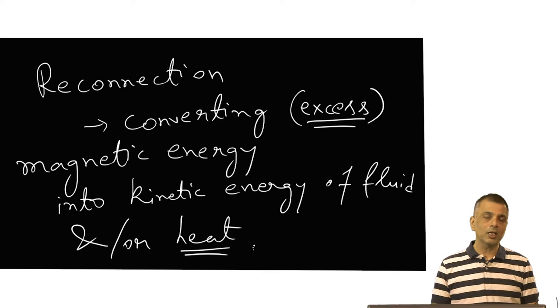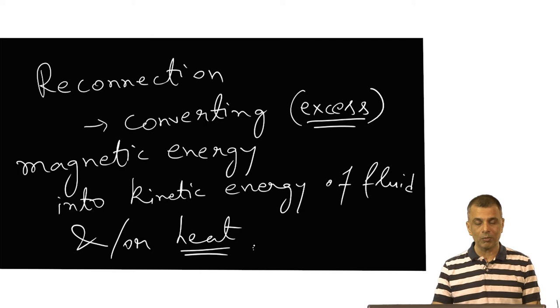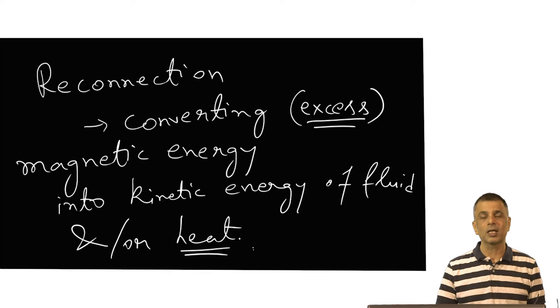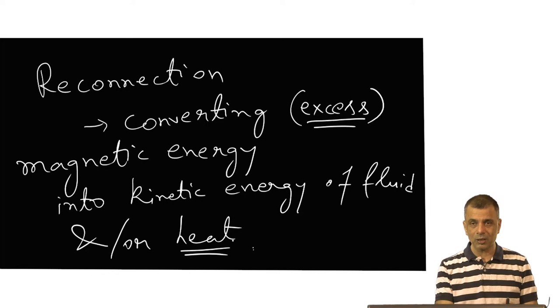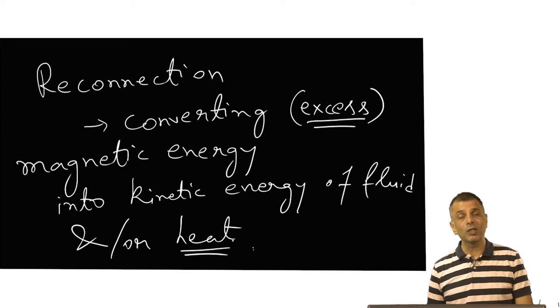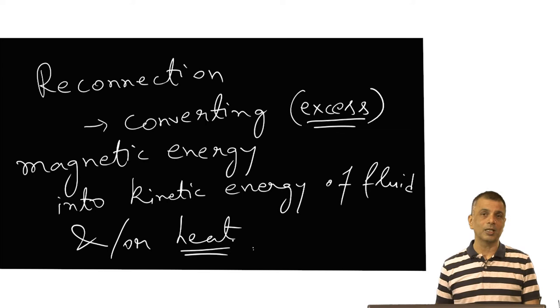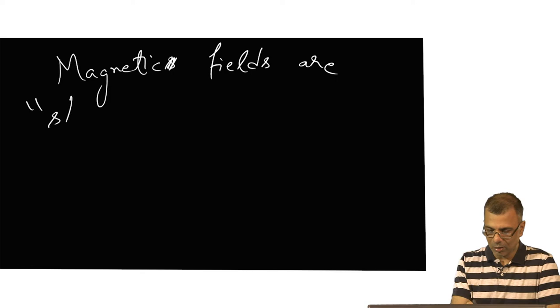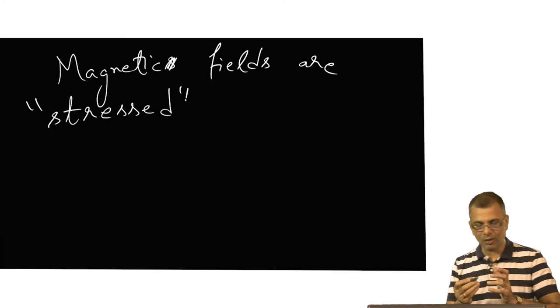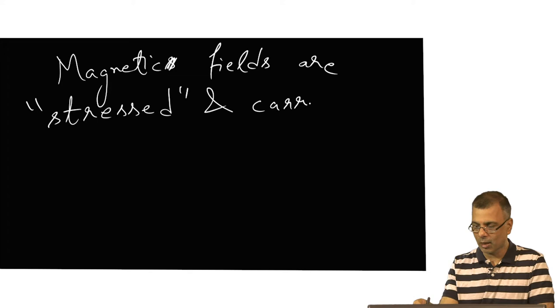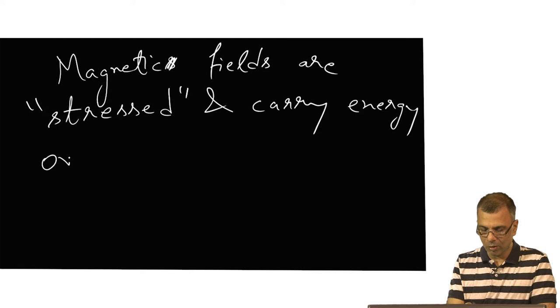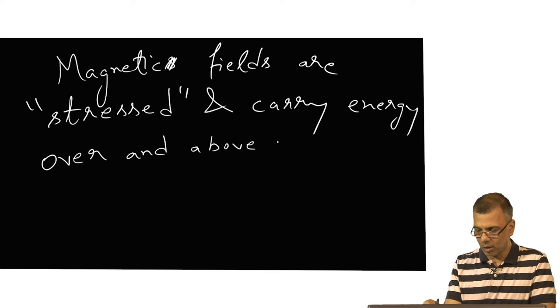Magnetic field lines many times are stressed. You remember when we talked about a potential field configuration — when we solved Laplace's equation to find the magnetic field. This would be a potential configuration, which by definition is the lowest energy configuration. But in many cases, it's reasonable to suspect that magnetic fields are stressed, or they are twisted and turned, and carry energy over and above the potential configuration for any given situation.